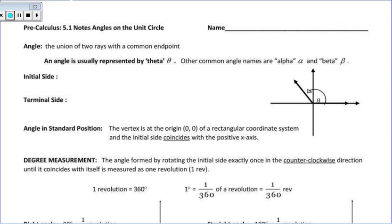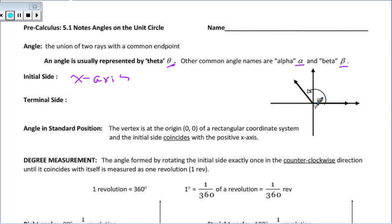When we talk about these angles, a lot of times we call them by the name theta. Other common names would be alpha or beta — those are Greek letters. The initial side is the x-axis, so the initial side is always going to be starting on the x-axis.